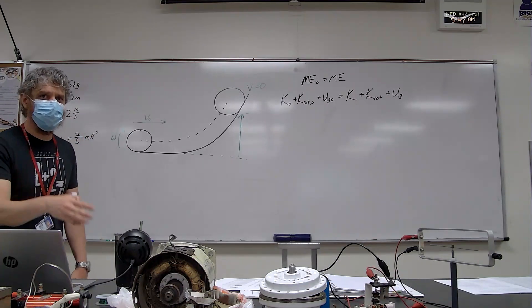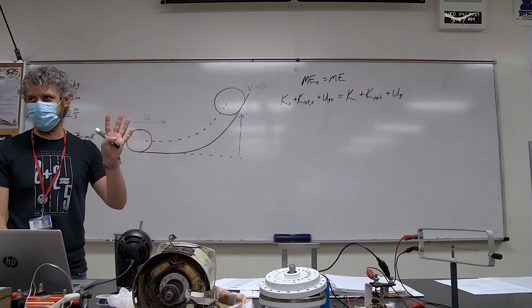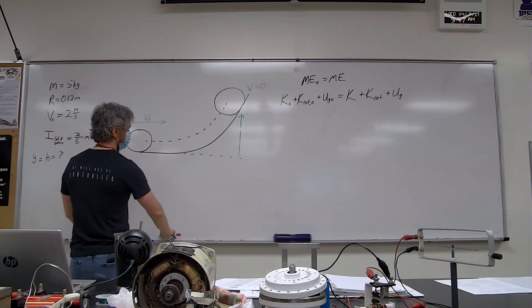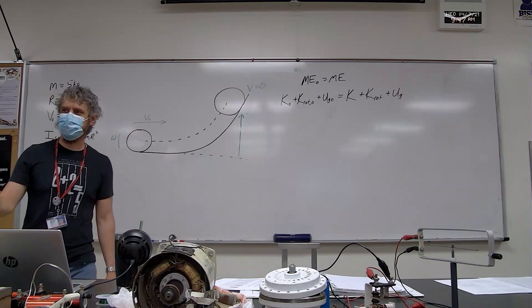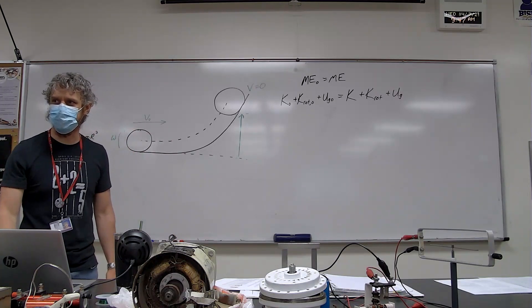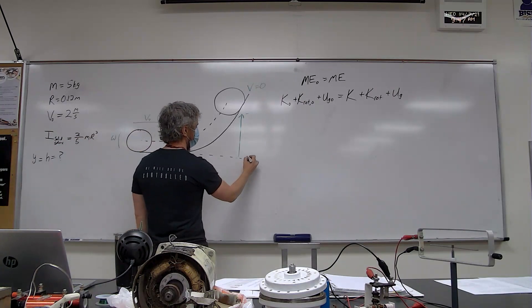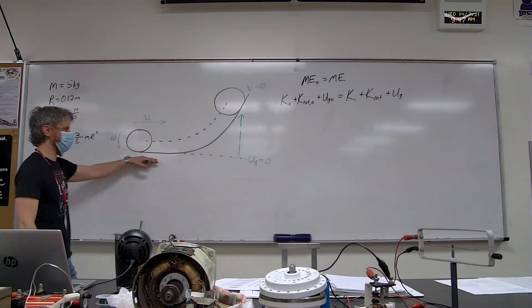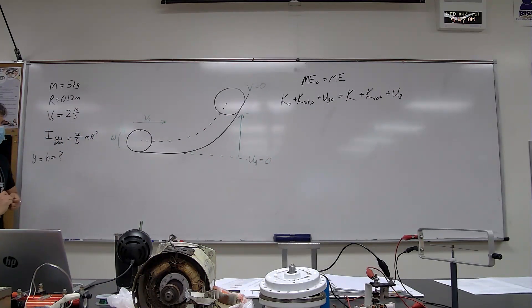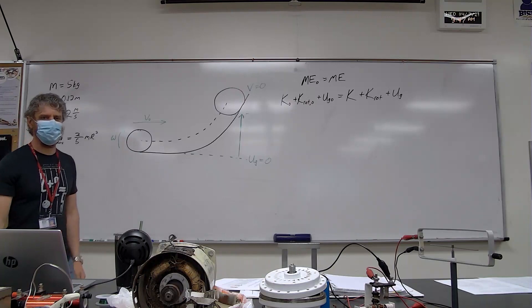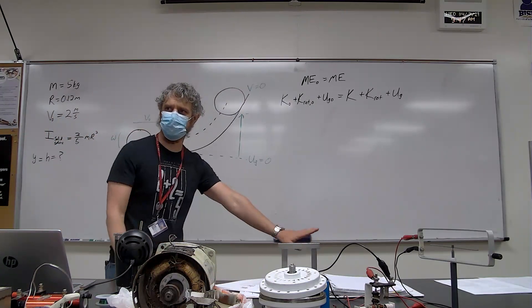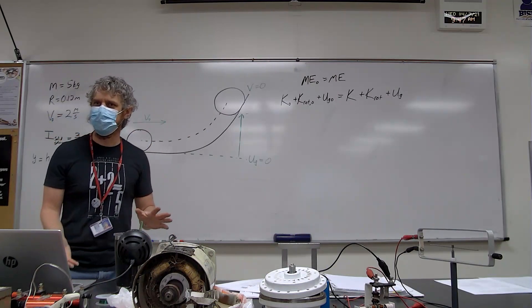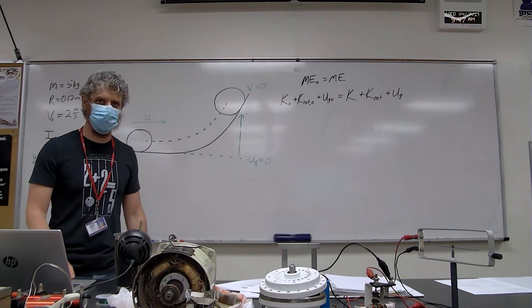Cross out any terms you know are zero. The most convenient choice is gravitational PE = 0 at the initial height. The choice of the zero point for PE is arbitrary — it's not potential energy per se that's important, it's the change in potential energy. So we set initial PE to zero.